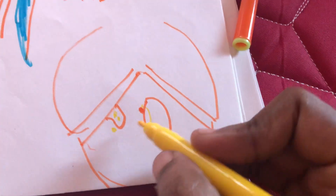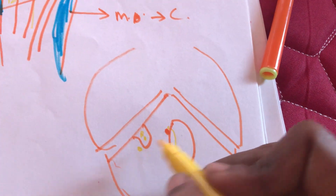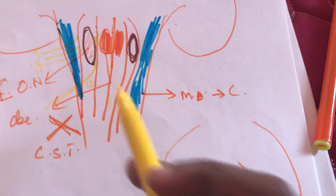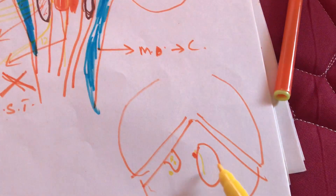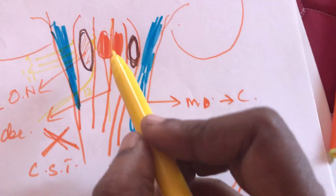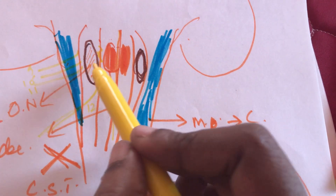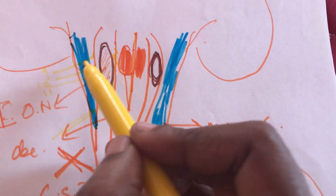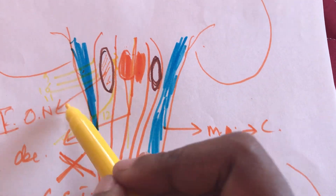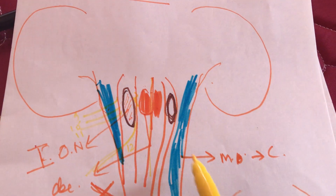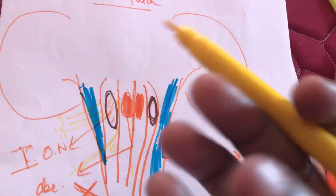From the posterolateral sulcus — between the olive and the inferior cerebellar peduncle — nerves 9, 10, and 11 are coming out via the jugular foramen. So medially the hypoglossal nerve comes from the anterolateral sulcus between the pyramid and olive, and laterally 9, 10, 11 come from the posterolateral sulcus. This covers the external features of the medulla.